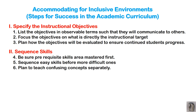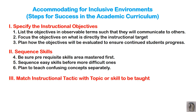Plan to teach confusing concepts separately. For example, the zero concept in mathematics — you can teach numbers one to nine first, and then teach ten separately, since zero is a confusing and important concept. Make sure you sequence skills properly before you start teaching.